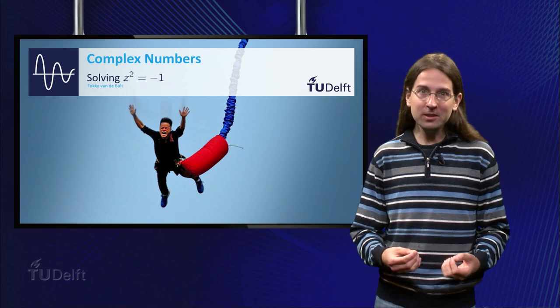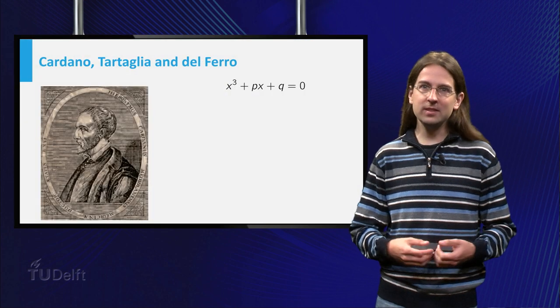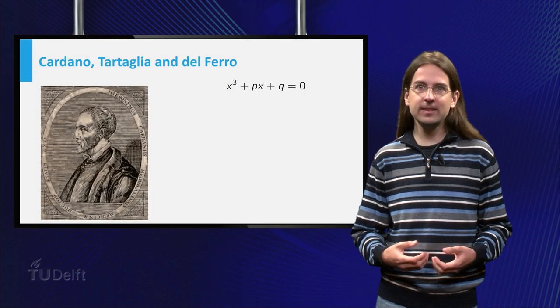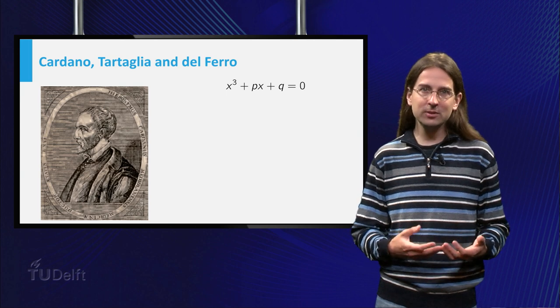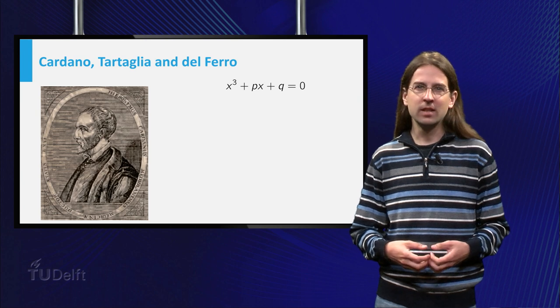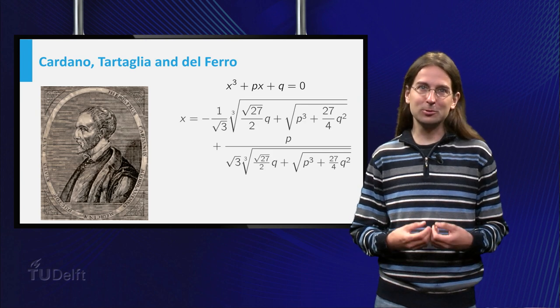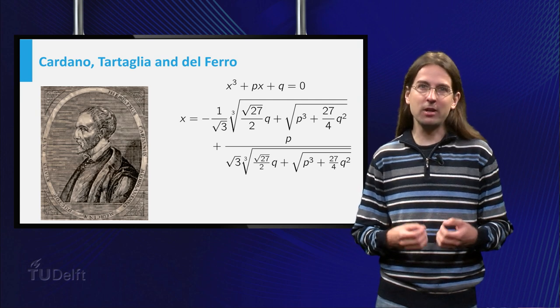Hello! Have you ever encountered an equation you could not solve? So did Italian mathematicians in the 16th century when looking at the cubic equation x³ + px + q = 0. They discovered a formula to solve this equation. As you can see on the slide, it is rather ugly.